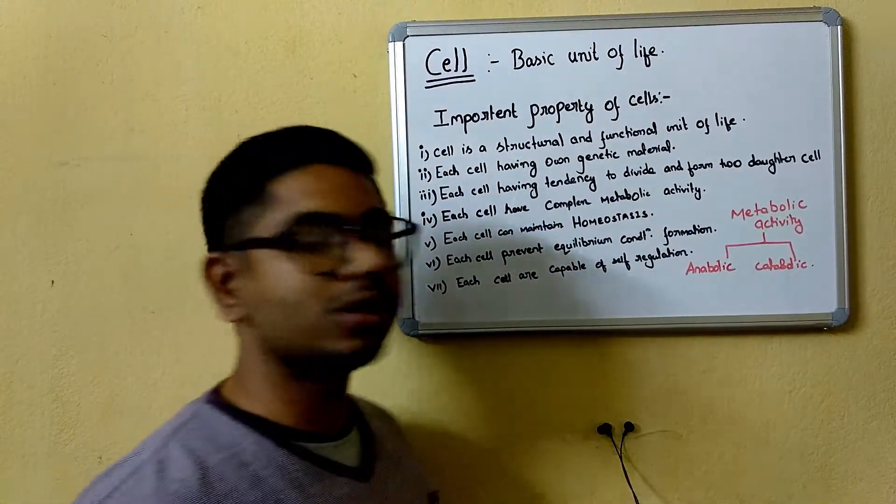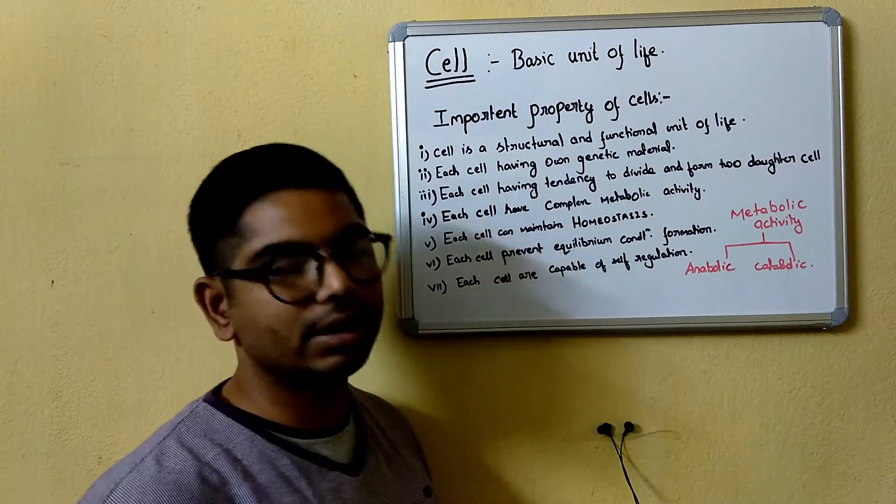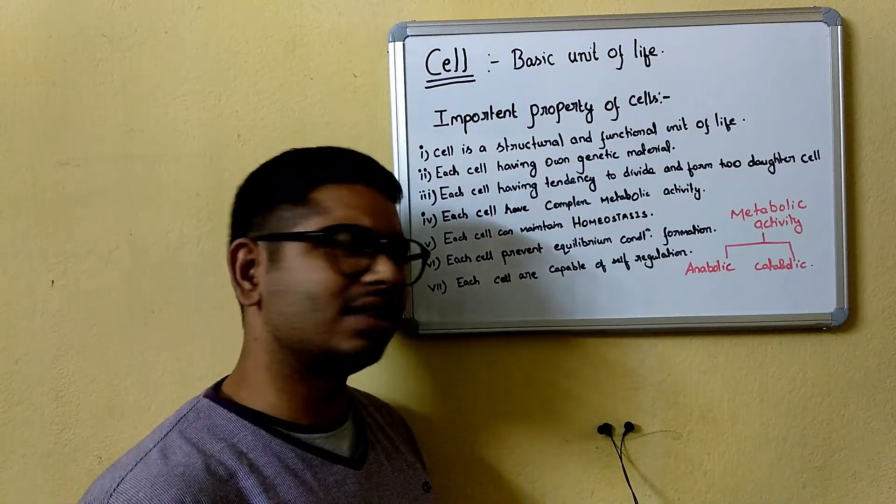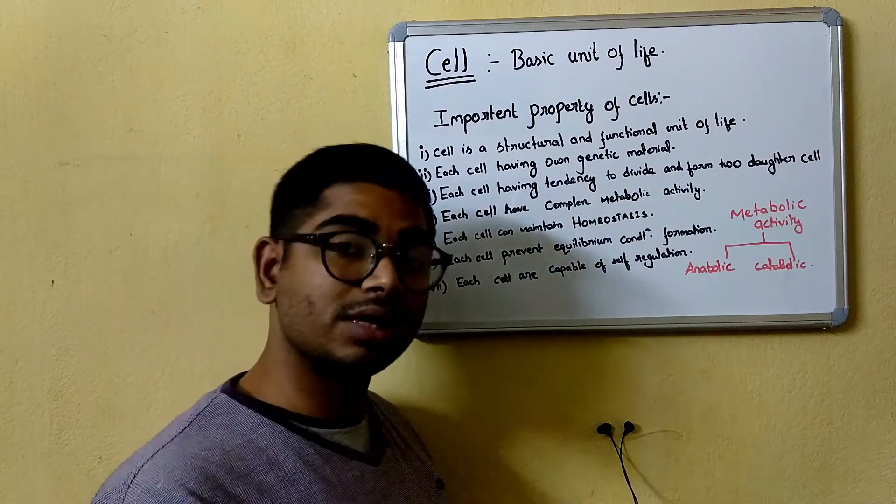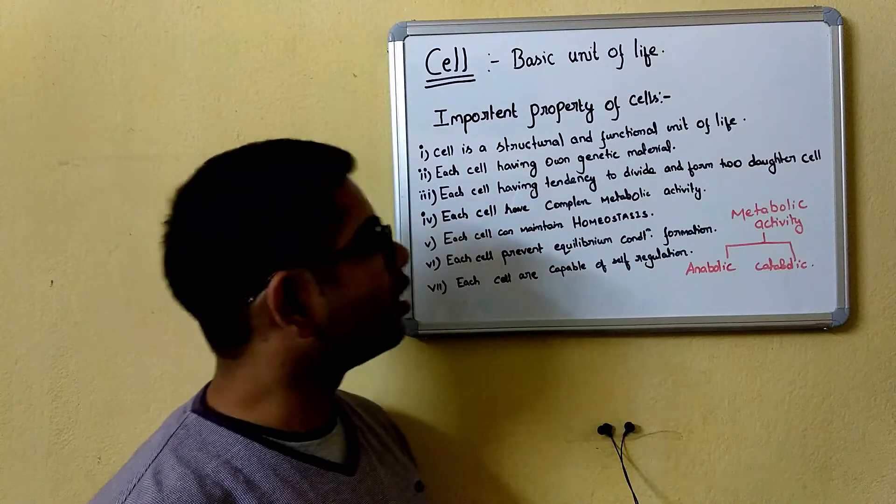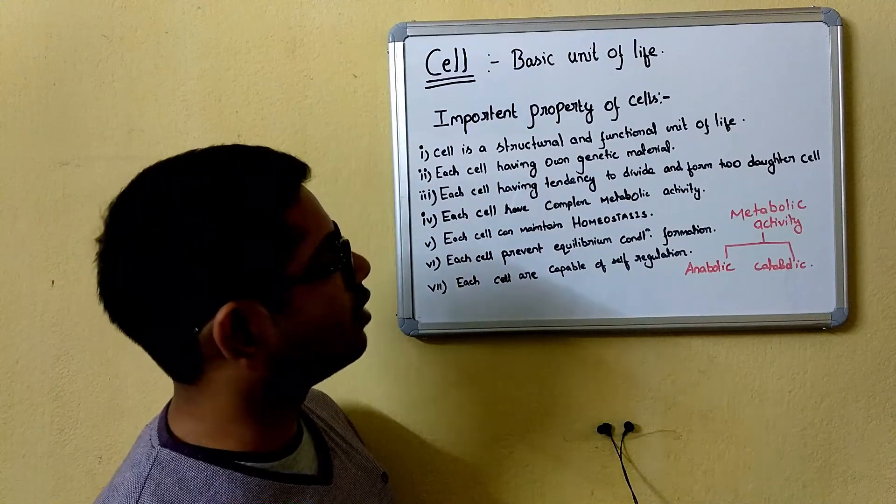These two subclasses are anabolic reaction and catabolic reaction. Anabolic reaction means something is formed, and catabolic reaction means something is disintegrated. Next, each cell can maintain homeostasis.